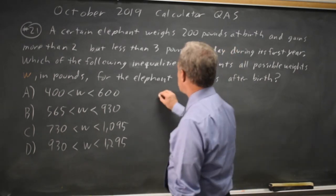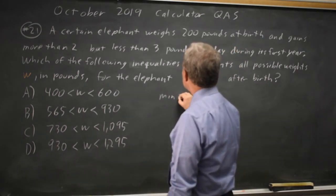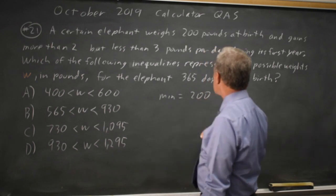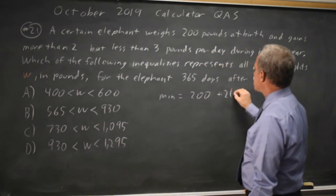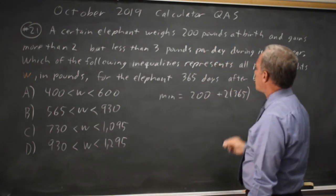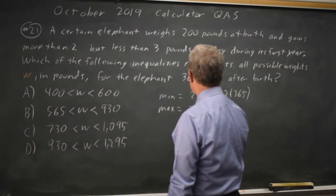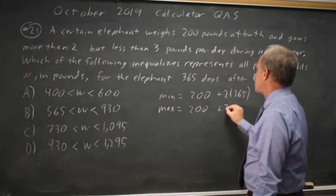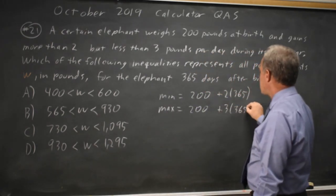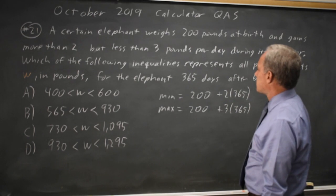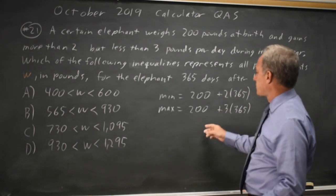So the minimum would be 200 at starting weight plus twice 365, and we will weigh more than that. And the maximum is the 200 starting weight plus 3 times 365, and since we're told we gain less than 3 pounds, we will weigh less than that maximum.